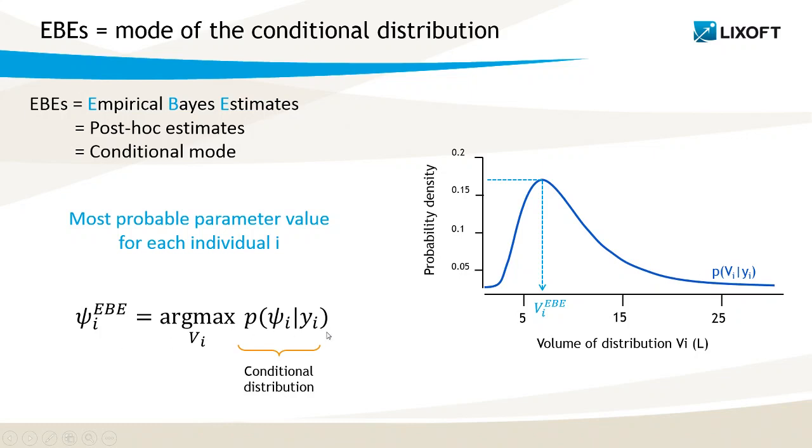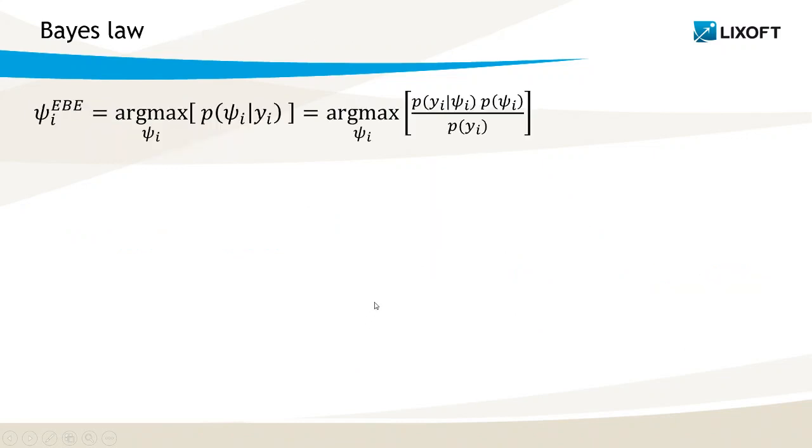The difficulty is that the conditional distribution has no closed-form solution. So the workaround is to use Bayes law and to write that the conditional distribution is actually equal to the probability of the data given the individual parameters times the probability of the individual parameters divided by the probability of the data. Because I am optimizing this formula with respect to the individual parameters psi, the denominator is constant as it does not depend on psi.